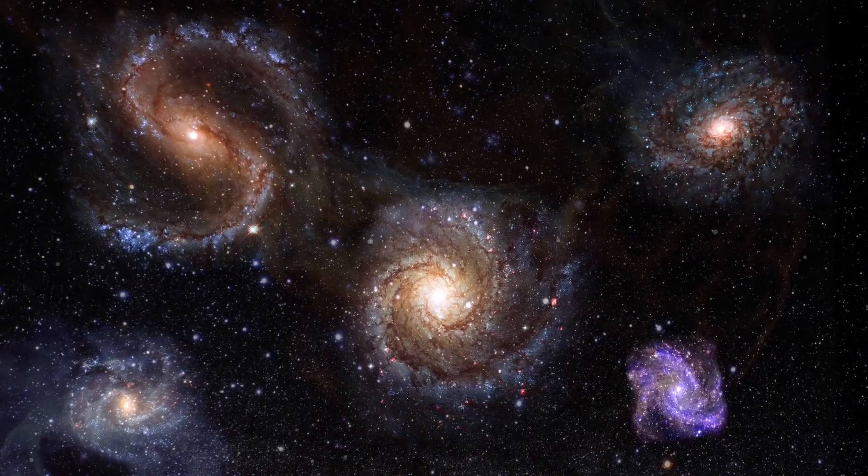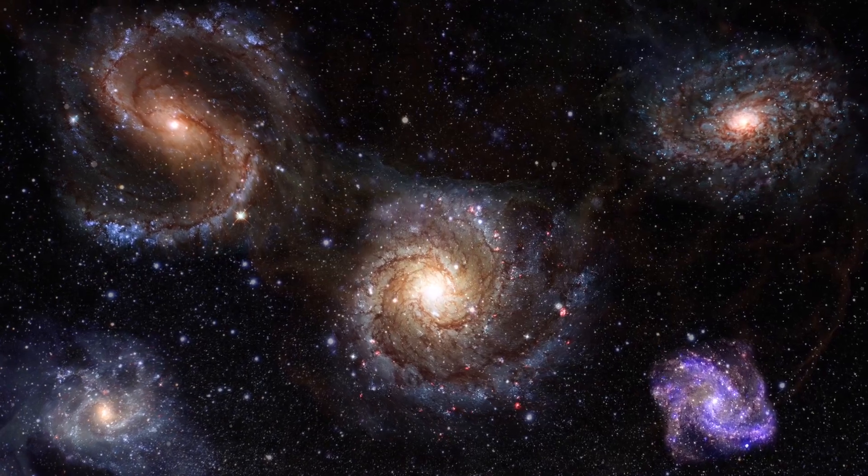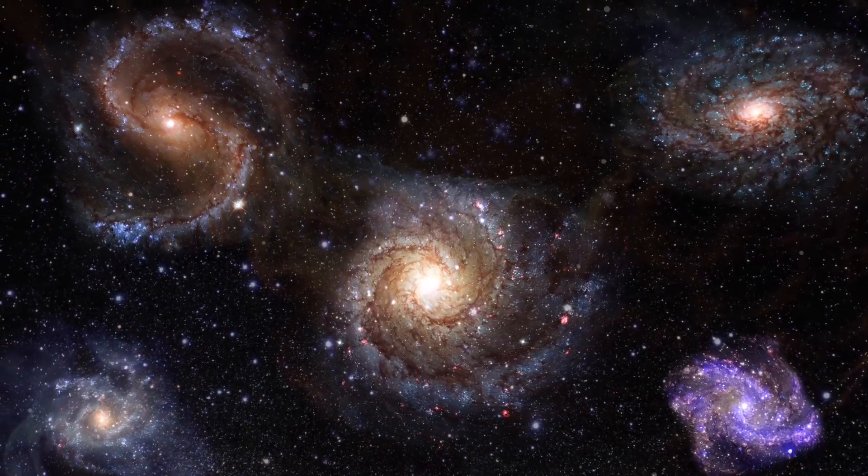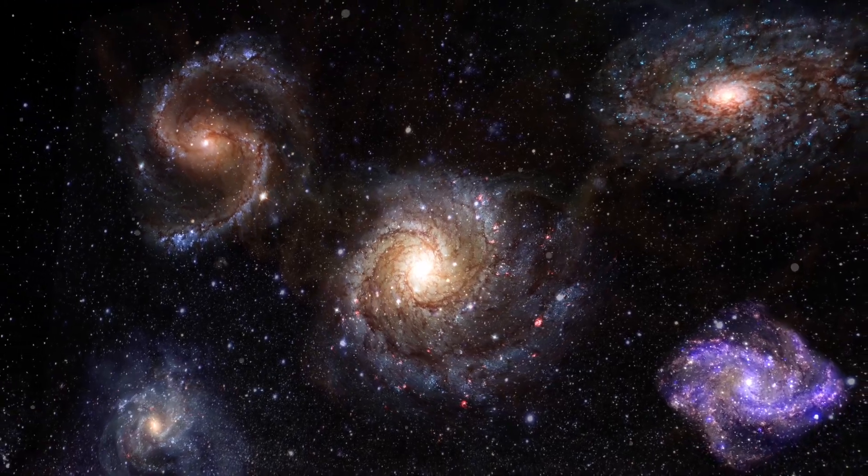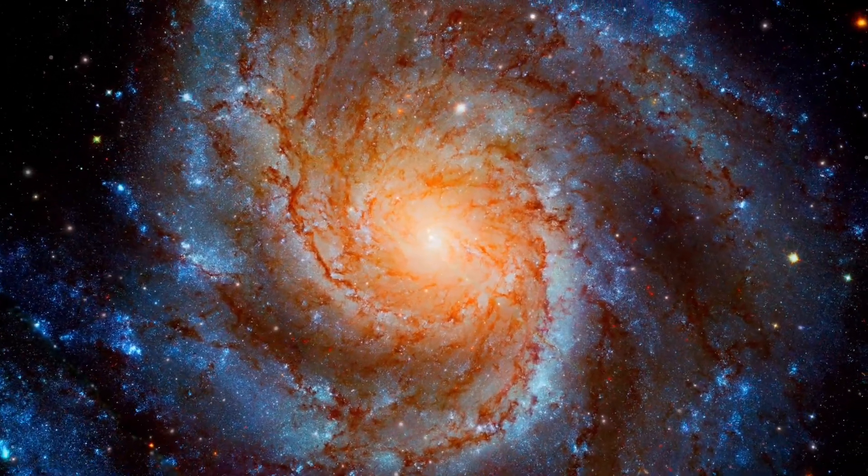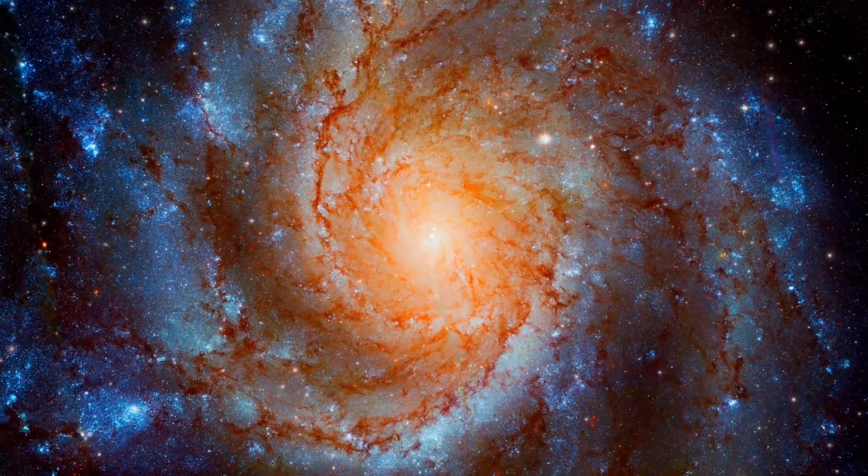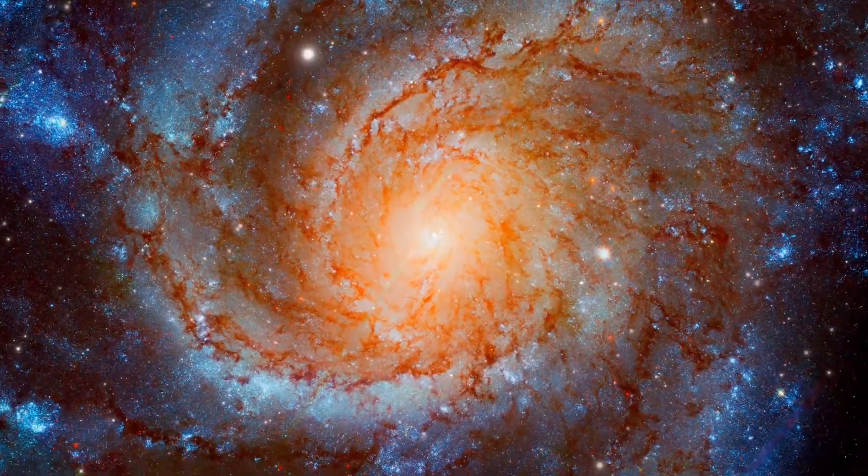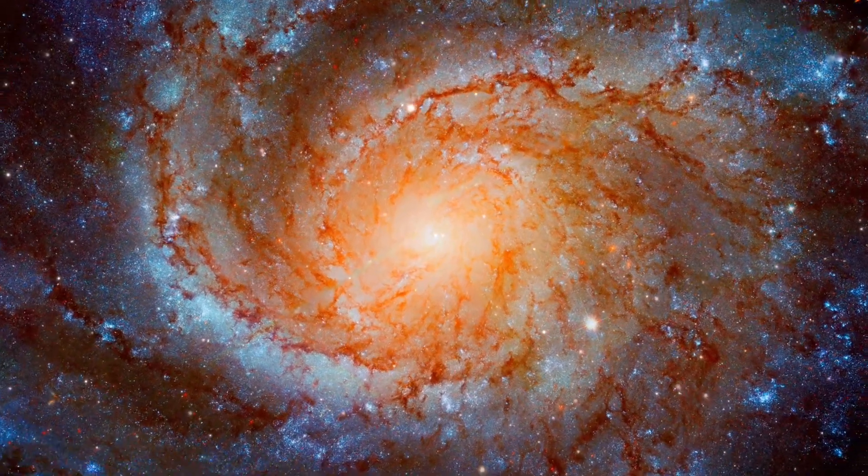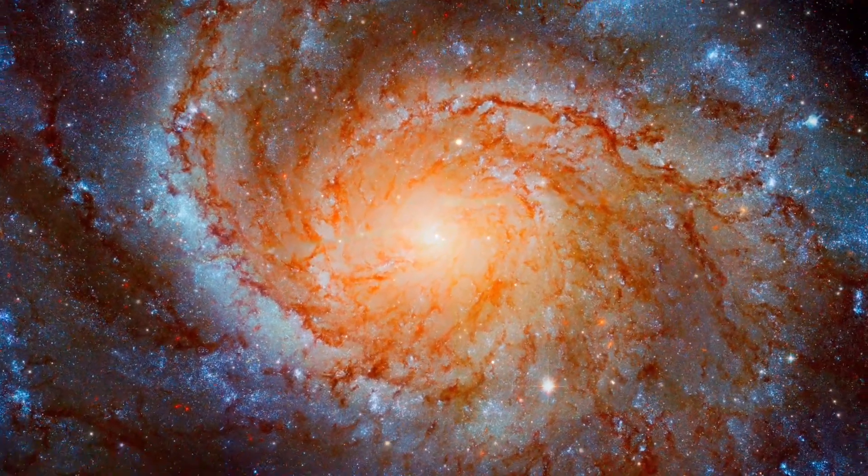Galaxies are vast collections of stars, gas, dust, and other celestial objects held together by gravity. Our Milky Way galaxy is just one of billions of galaxies in the universe. Galaxies come in different shapes and sizes, ranging from spiral galaxies to elliptical galaxies.